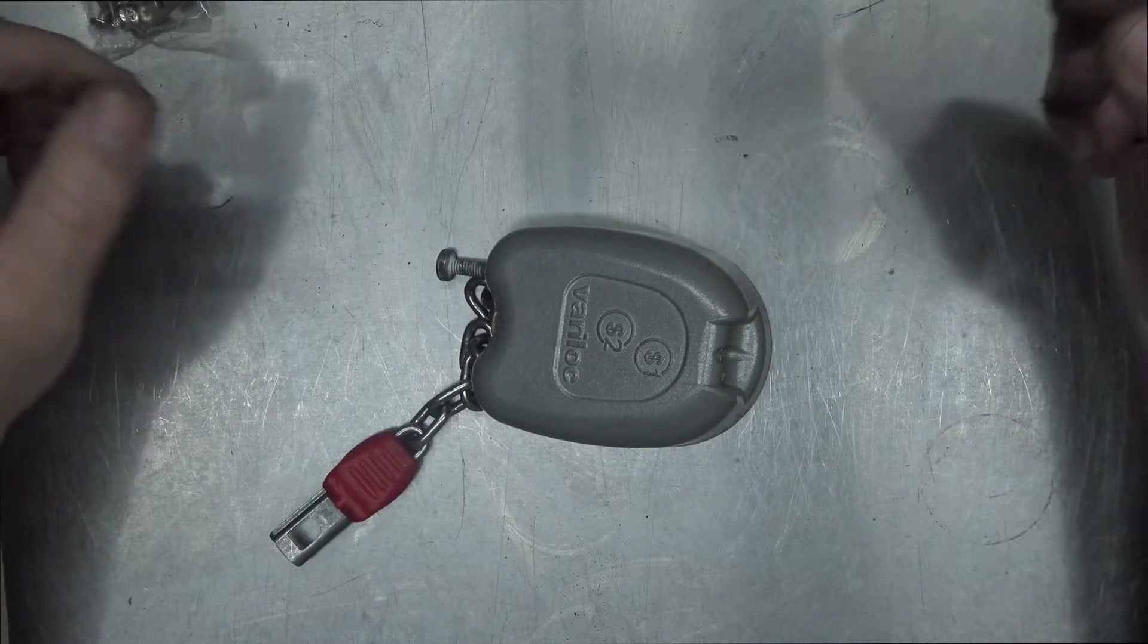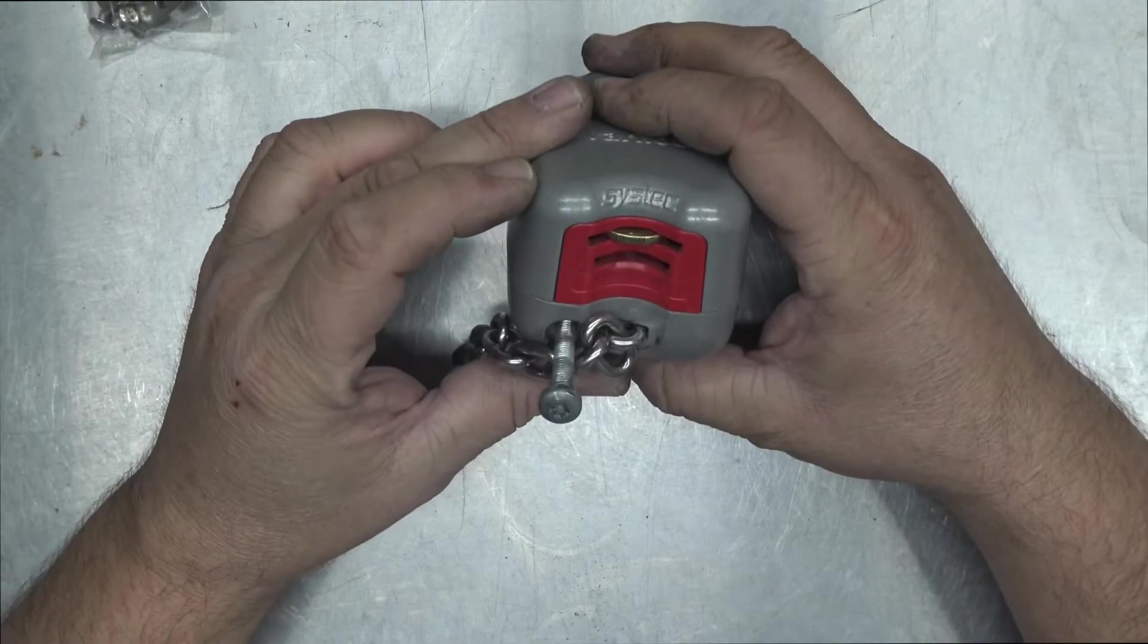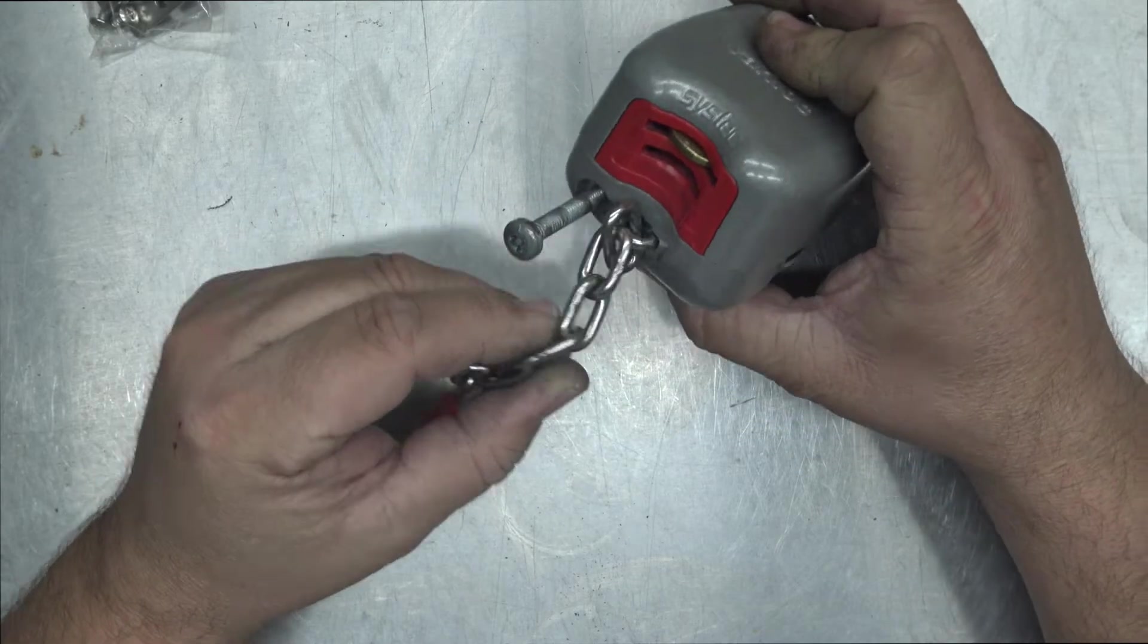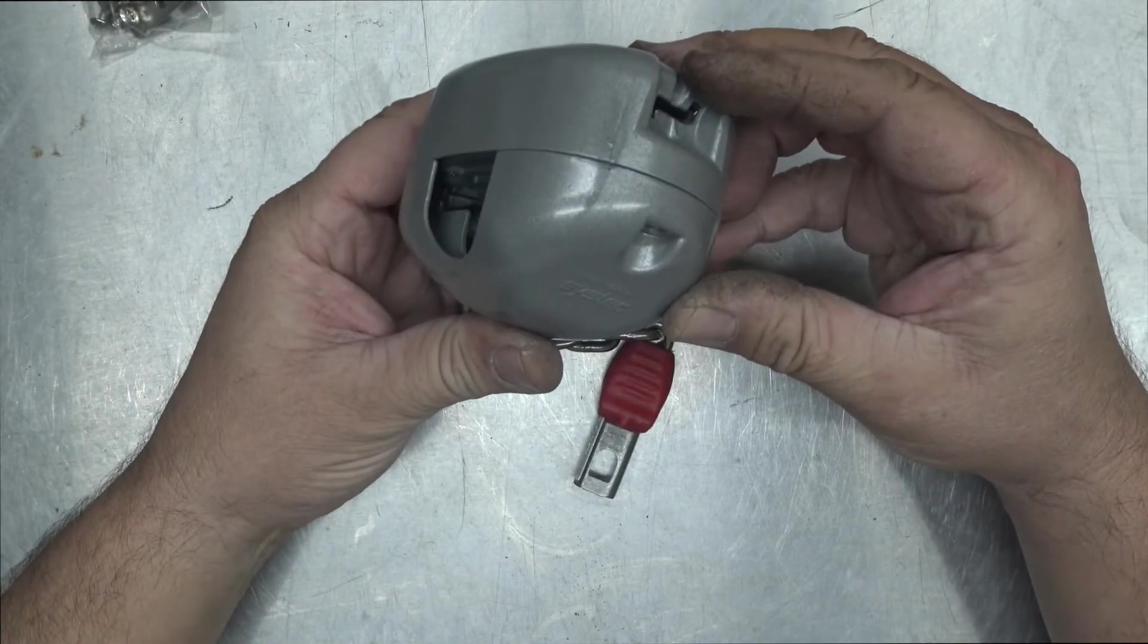Welcome to another video from Dr. Lock. What we have here is a coin-operated lock, and these are used on trolleys. There was a trolley at a building site I was on that got squashed by a forklift and the whole thing was going in the bin. So I thought why not grab the lock off and have a look.